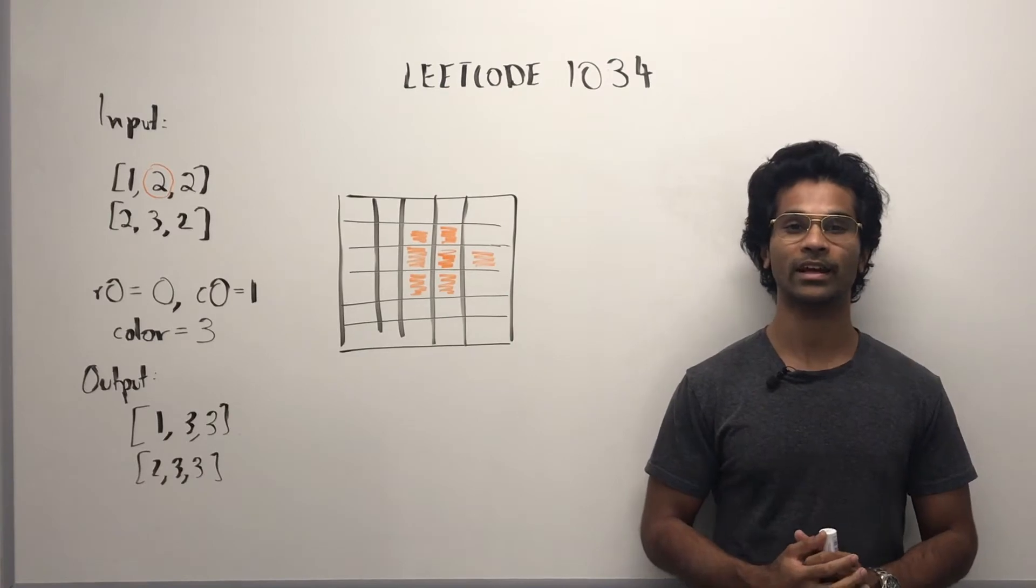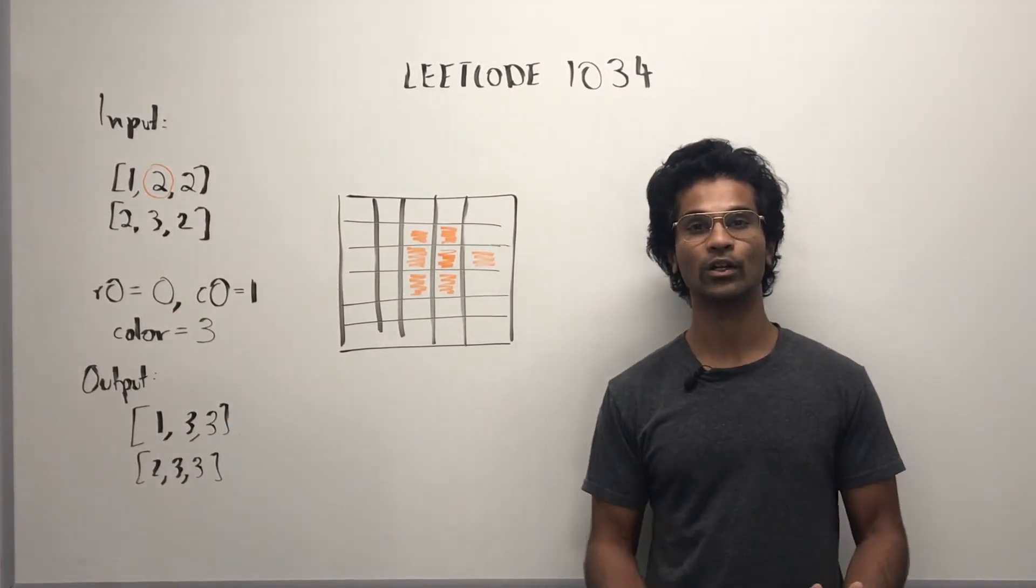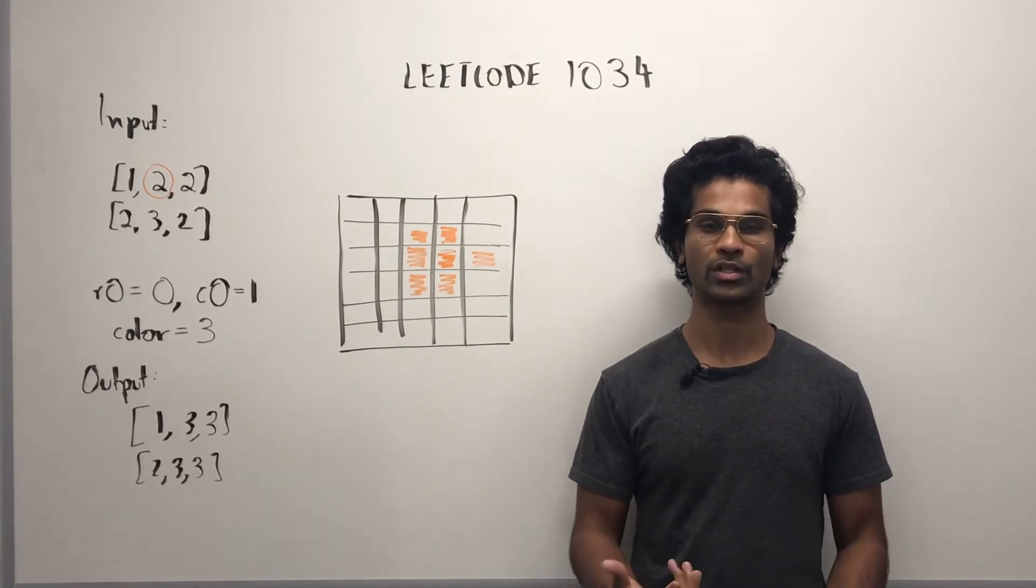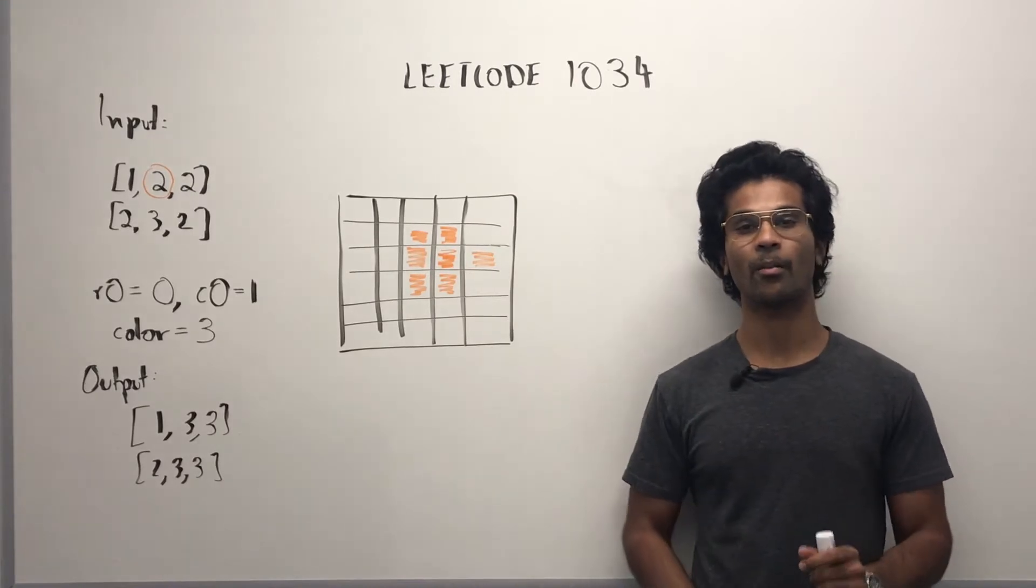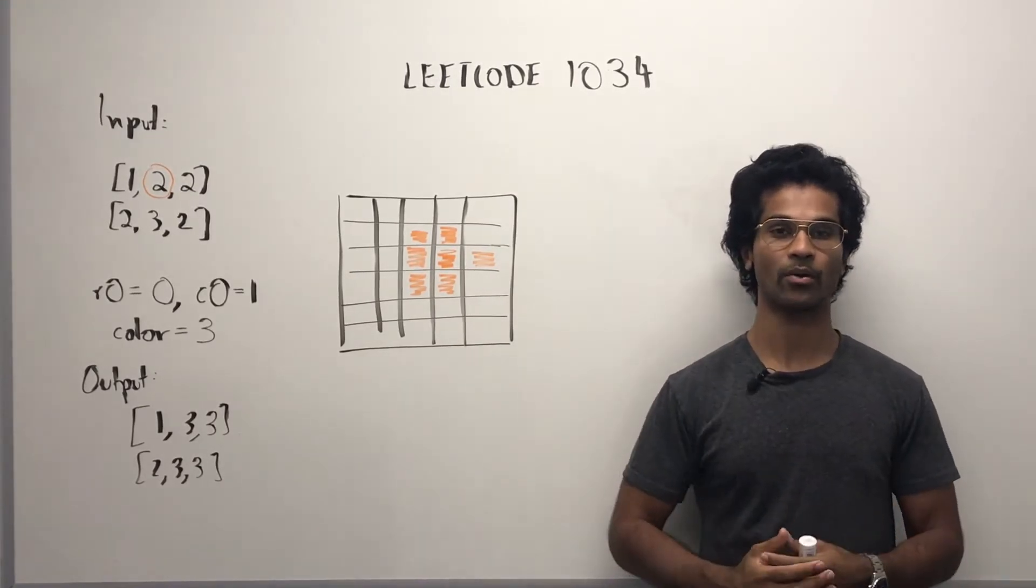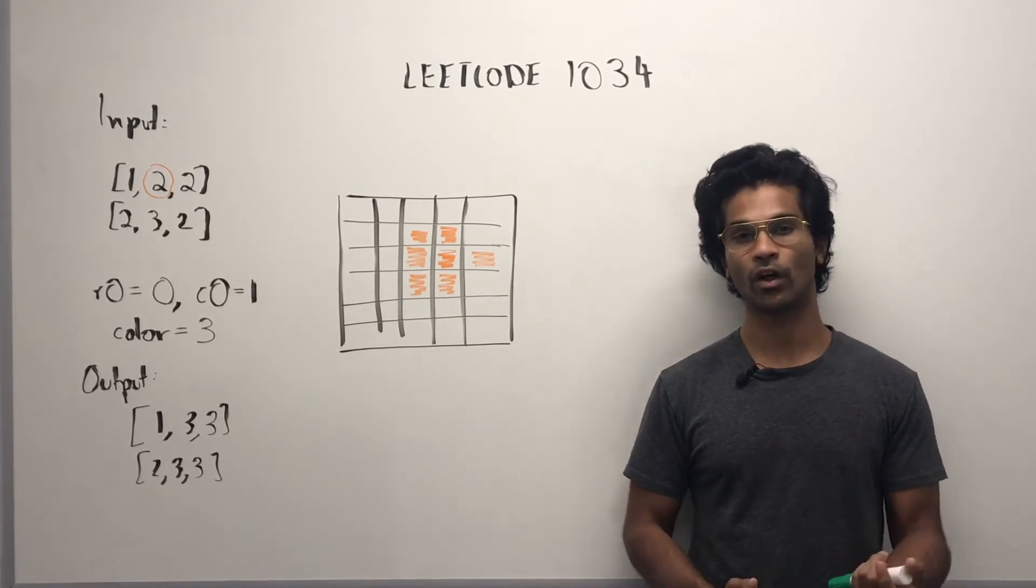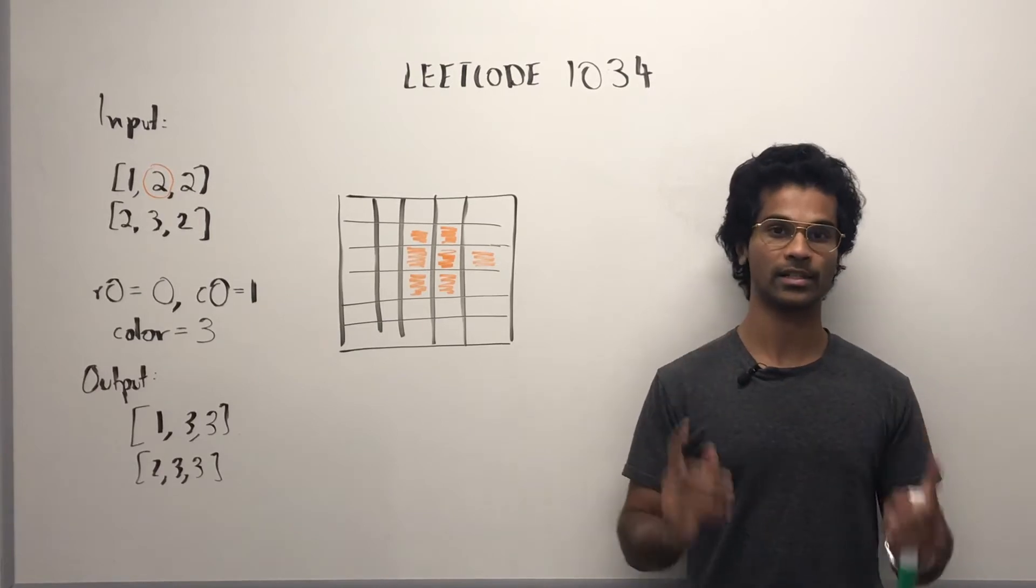How did that happen? We have to take the connected component that's at this point and color all the border nodes of that connected component to this new color. Remember, a border node is a node that's on the edge of the connected component.